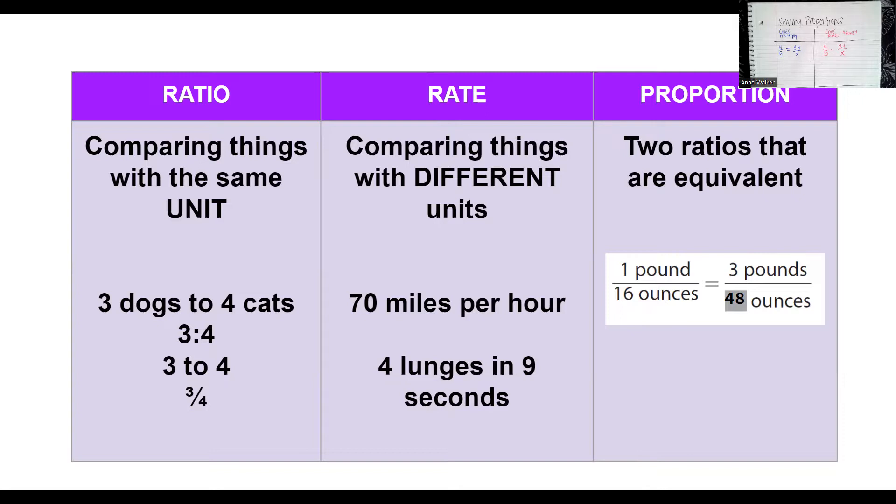A rate, on the other hand, compares things that have different units. For example, if you're driving a car and going 70 miles per hour, miles and hours, while they're units of measurement, one is a measurement of distance and one is a measurement of time. There's not really a way you can find a common name for those two things.